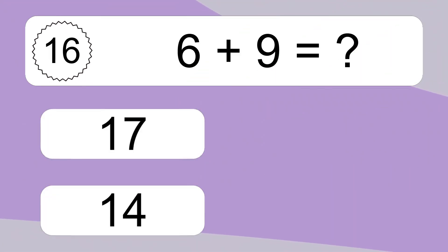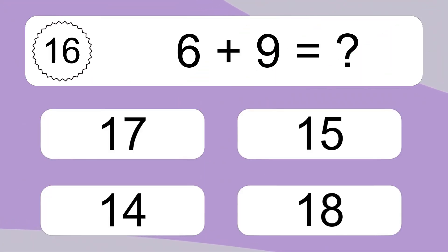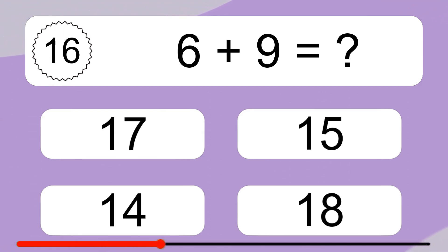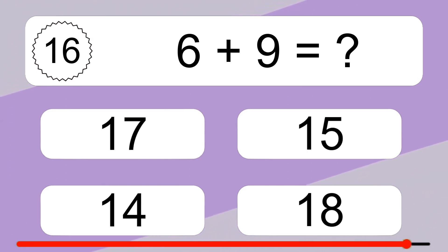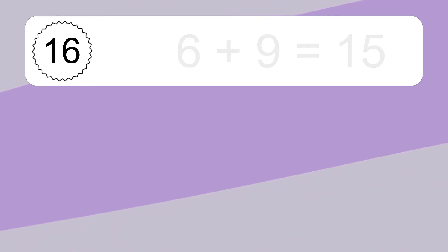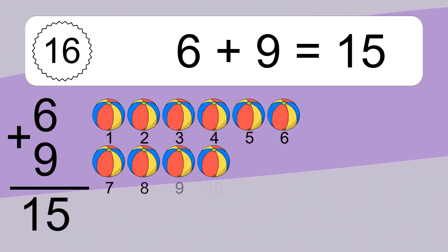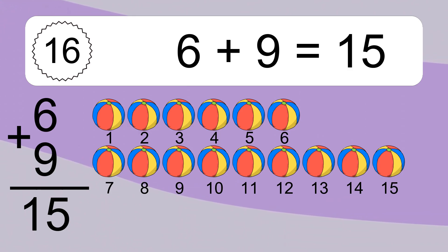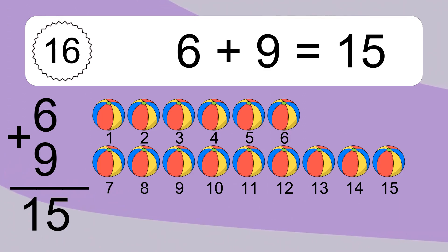6 plus 9 equals what? 6 plus 9 equals 15. Let's count it. 1, 2, 3, 4, 5, 6, 7, 8, 9, 10, 11, 12, 13, 14, 15.